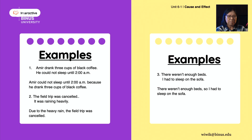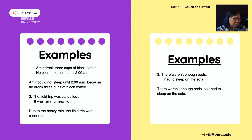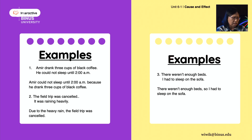Pay attention to some other examples. Amir drank three cups of black coffee. He could not sleep until 2 a.m. Please combine these two sentences using because. Answer: Amir could not sleep until 2 a.m. because he drank three cups of black coffee. The second one: The field trip was cancelled. It was raining heavily. Combine using due to, and you may put due to at the beginning of the sentence. Answer: Due to the heavy rain, the field trip was cancelled.